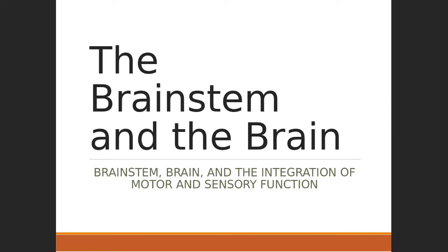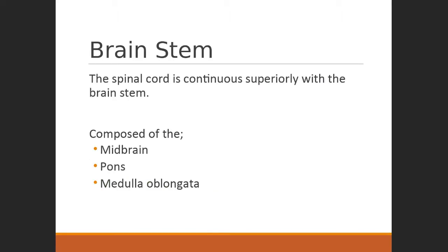Remember we said back when we talked about homeostasis that we are receptor-driven organisms. We put a lot of importance on sensory information coming in to coordinate and regulate motor function going out. We'll be emphasizing sensory versus motor function with respect to how we control voluntary movements. We'll start at the brain stem and move superiorly from there.